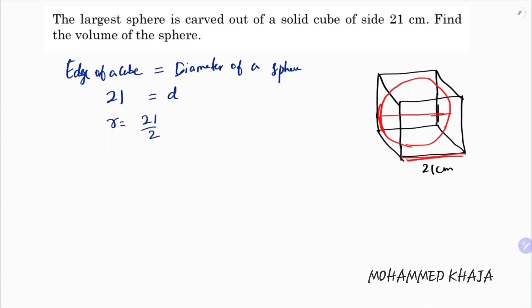They are asking us to find the volume of a sphere. The volume of a sphere direct formula is: volume of sphere = 4 by 3 pi r cubed.